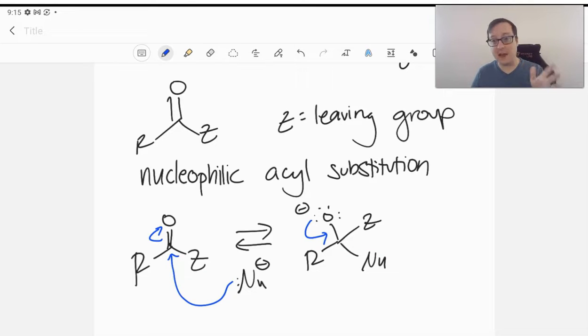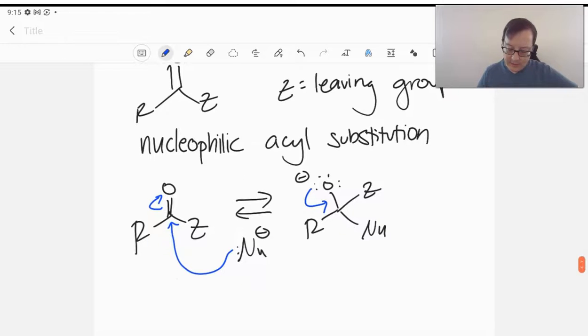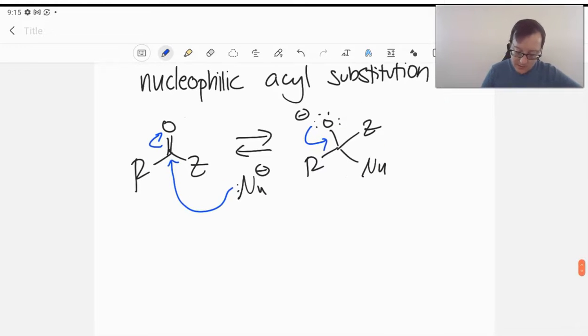If you were to remove them, they would attack right back at the carbonyl again and reform this intermediate. So we don't typically see R groups leaving, but there will be exceptions to this next chapter. With this, when we're taking a look at what's happening here,